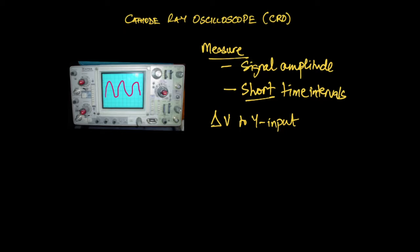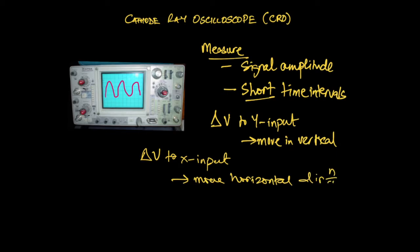That potential difference change in the Y input would move this waveform in the Y direction, in a vertical direction. So make a note of that: move in vertical. Similarly, if you were to apply a delta V to the X input, you would be able to move the signal from right to left. So move in the horizontal direction.